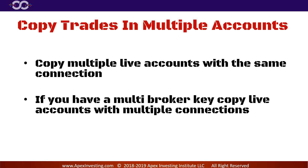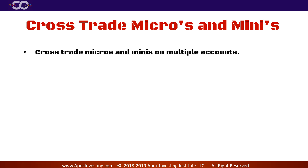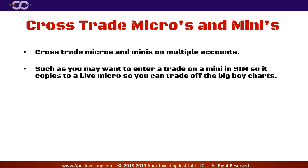You could have an AMP account, a Ninja account, a Rhythmic account, and copy all of them at the exact same time. If you just have a Rhythmic account with multiple accounts in it, you could copy all of them with a single broker key. You also can cross-trade micros and minis on multiple accounts — for example, enter a trade on a mini sim so it copies to a live micro, so you can trade off the big boy charts without staring at two different charts.